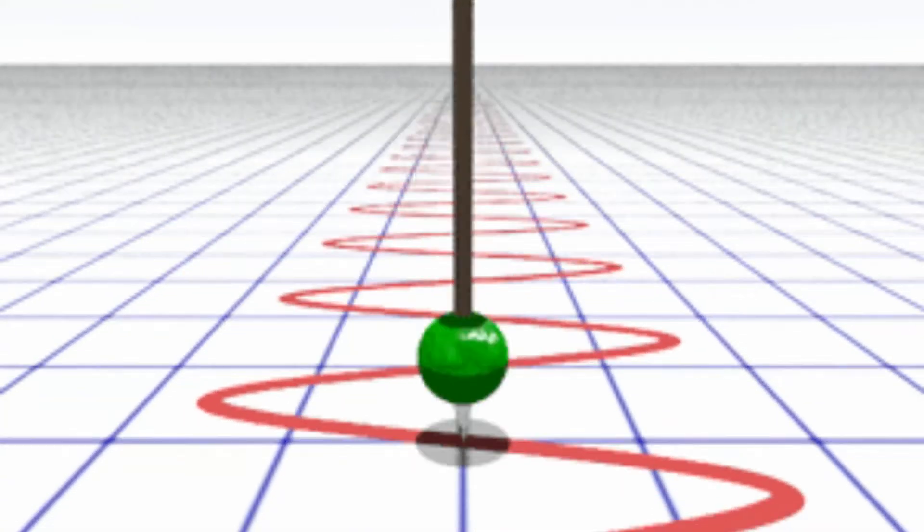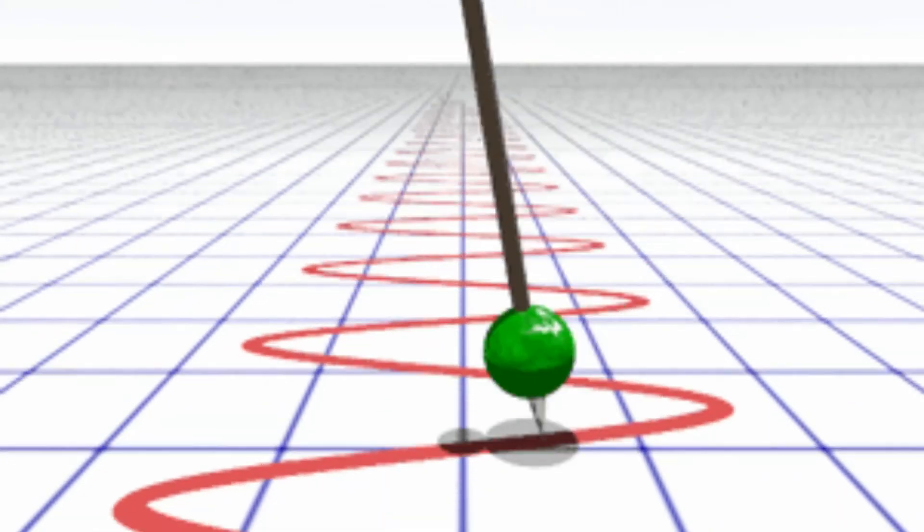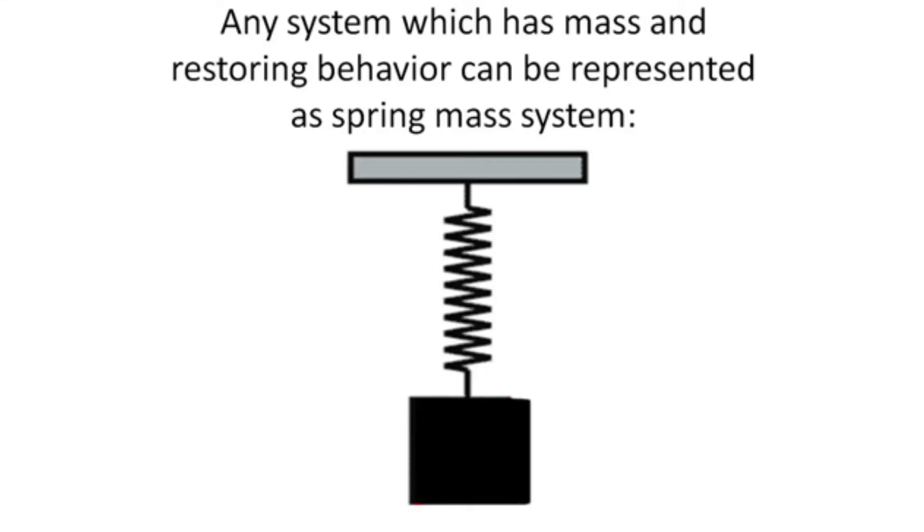All bodies possessing mass and elasticity are capable of vibration. The blade's elastic behavior can be represented as a spring element and mass of the blade as lumped mass, as shown here, which is a typical representation of a vibratory system.